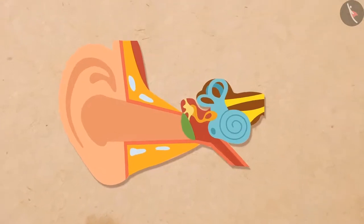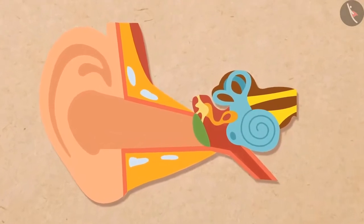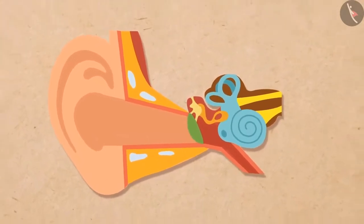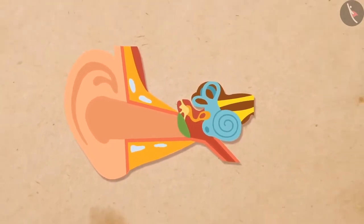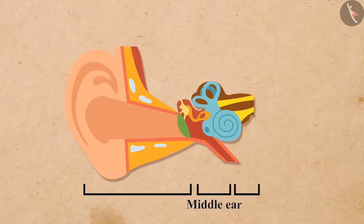Now let us learn about the auditory parts of the human ear and understand how it functions. As you can see in the picture, the human ear is mainly divided into three parts: the outer ear, the middle ear, and the inner ear.